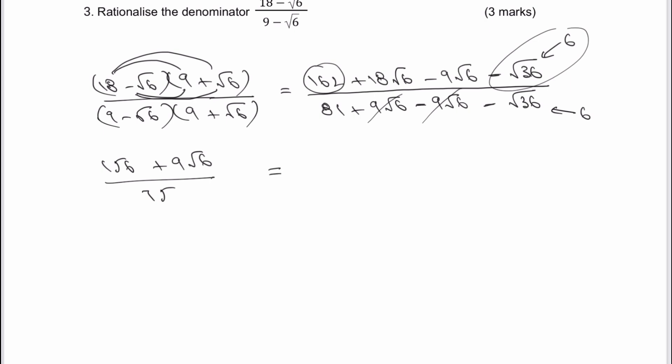So as a final answer to get that full three marks, you might end up with 52 plus three root six, all divided by 25.